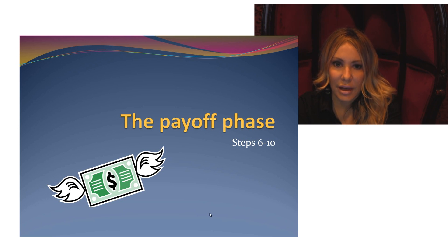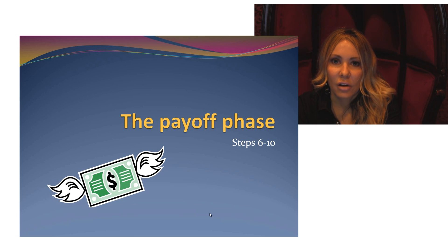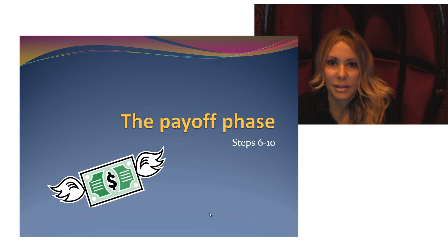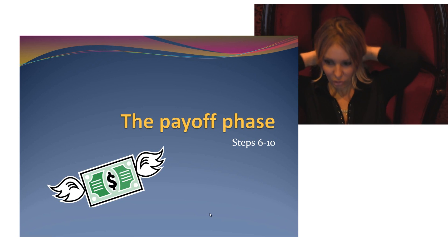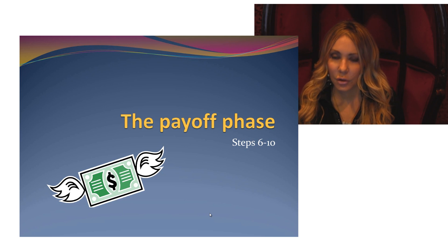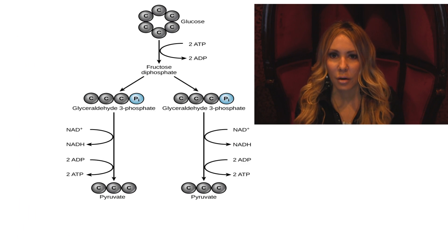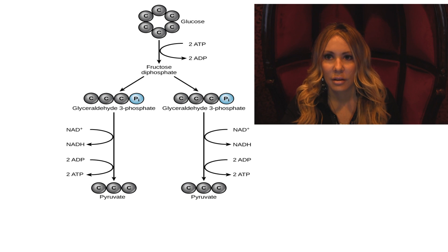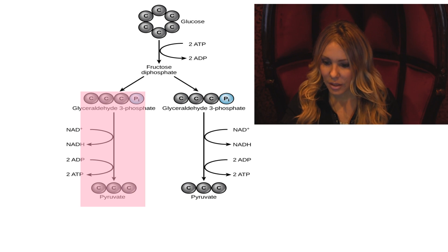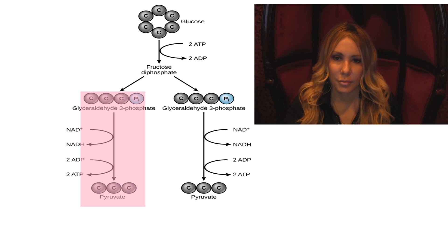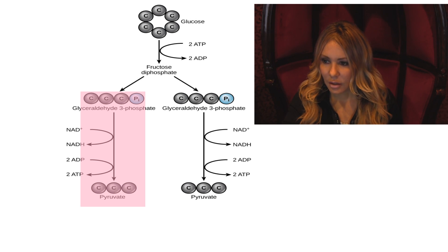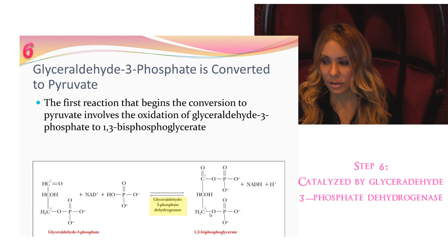Steps 6 through 10 are the payoff phase. Steps 1 and 3 cost us 2 ATPs — one from each step. In steps 6 through 10, we're starting with two three-carbon molecules of glyceraldehyde 3-phosphate, and I'm only going to trace one pathway, so everything will be multiplied by two. Step 6 is an oxidation reaction as well as a phosphorylation.